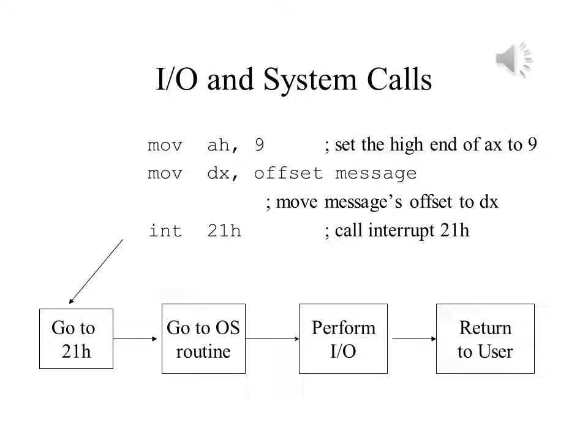Input and output are performed by the operating system for user programs. This slide shows an example of how an application program asks the operating system to display a message on the screen. MS-DOS will have several functions associated with a given interrupt. The function number is stored in the AH register, the high end of the AX register, and the message's offset is loaded in the DX register. After this, control is transferred to DOS, and DOS performs all the necessary steps in displaying the message on the screen.